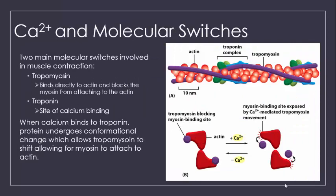As calcium is released into the cytosol, it will bind to a molecule known as troponin. This molecule sits on the actin filament in association with a second protein known as tropomyosin. Together these proteins form a molecular switch that prevents myosin from attaching to actin. When calcium is released, it binds to the troponin protein, creating a conformational shift, which then causes a shift in the tropomyosin, creating a space on the actin filament for the myosin heads to bind.